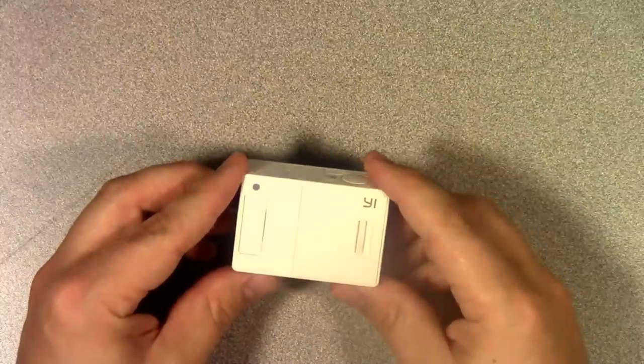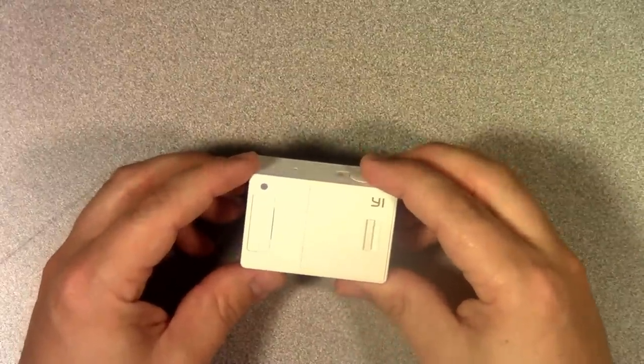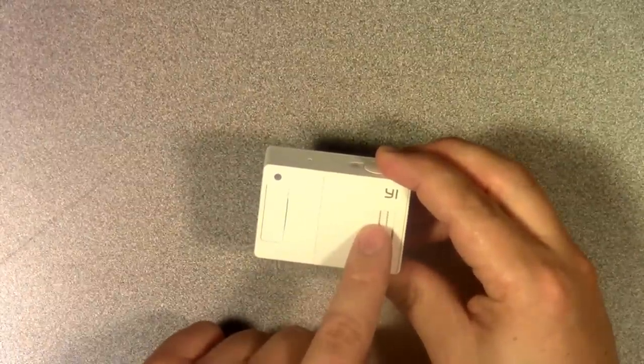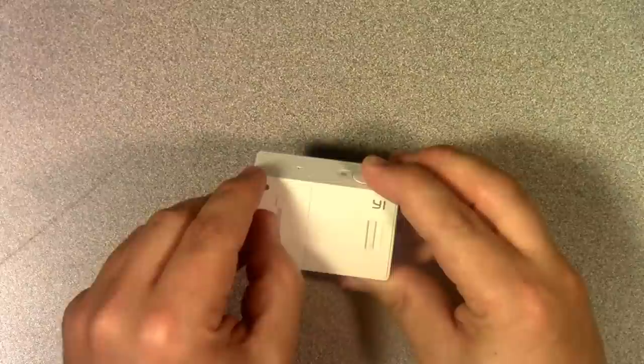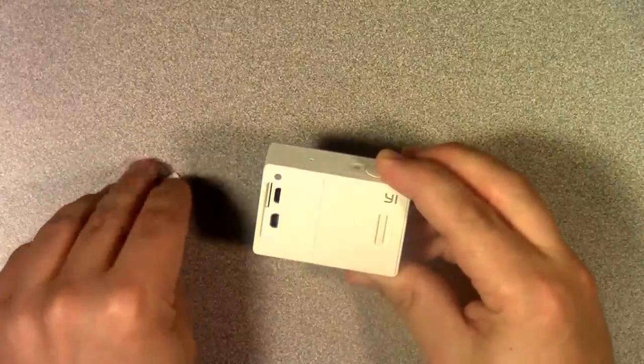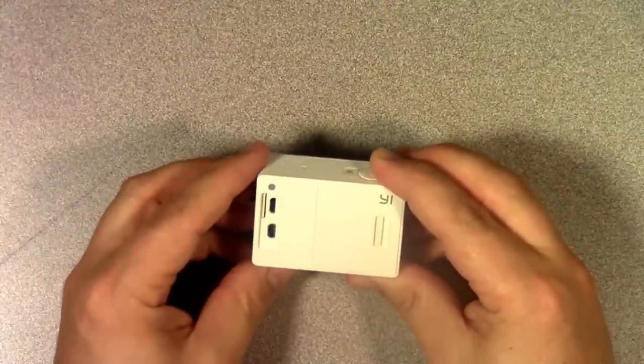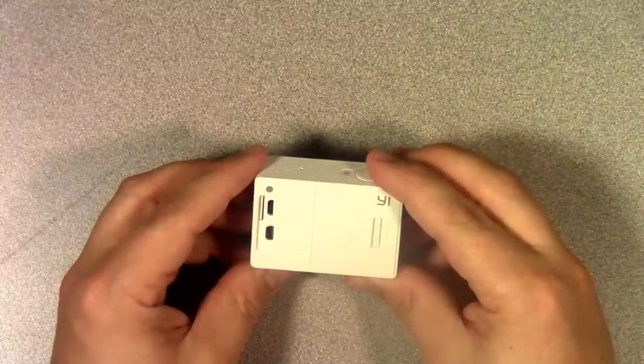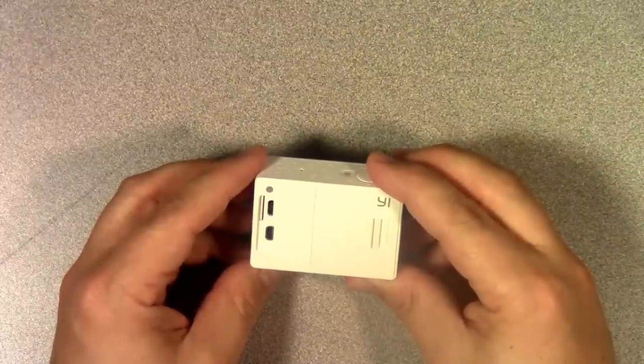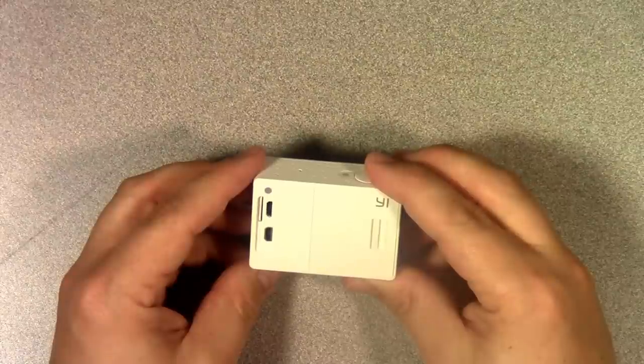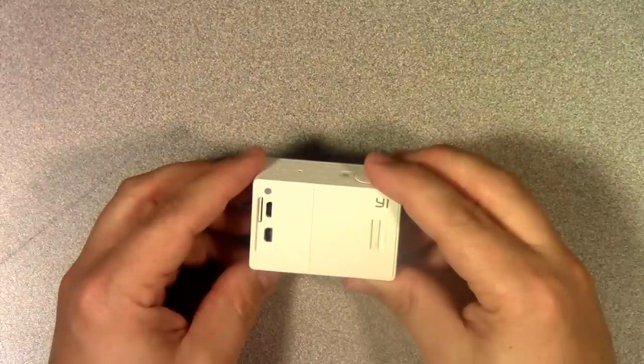Now this video assumes that you've already inserted the battery into the compartment on the right side of the back. It also assumes that you've inserted a micro SD card that goes in this slot right here. This camera supports micro SD cards up to 64 GB and it recommends class 10 compliant cards for best performance.